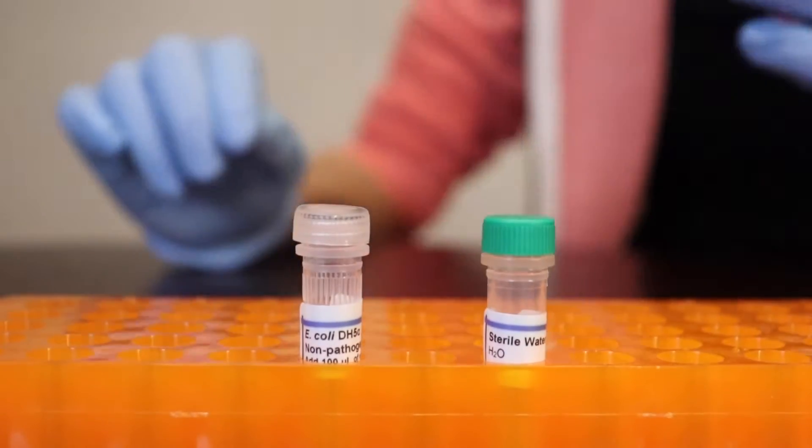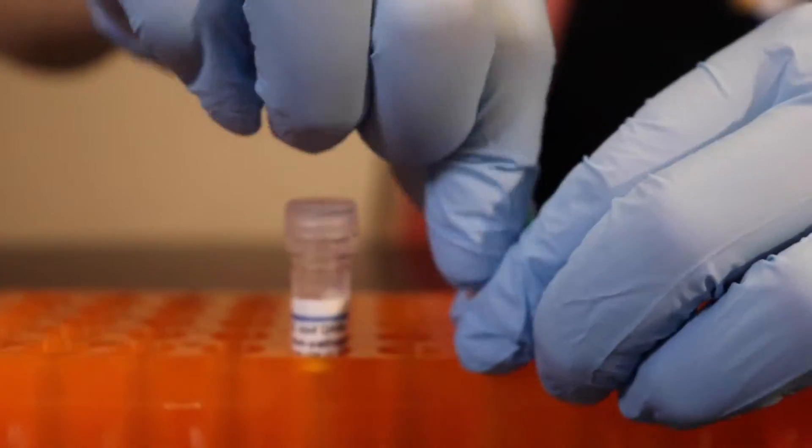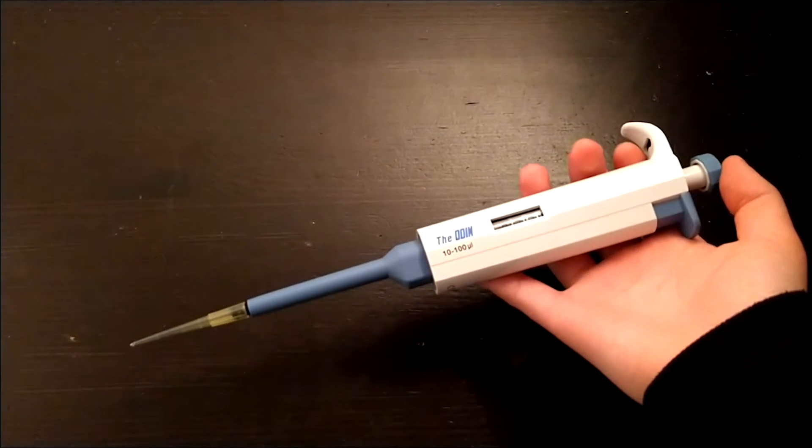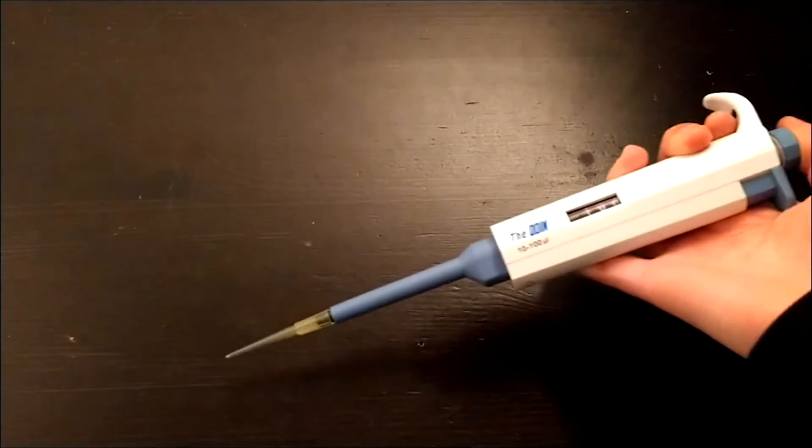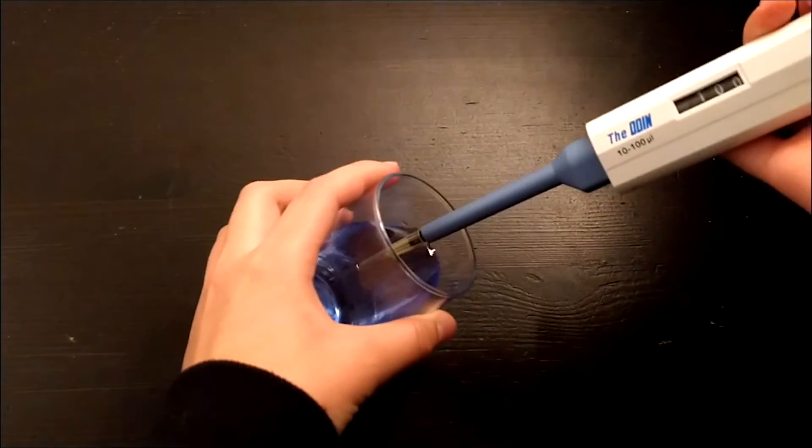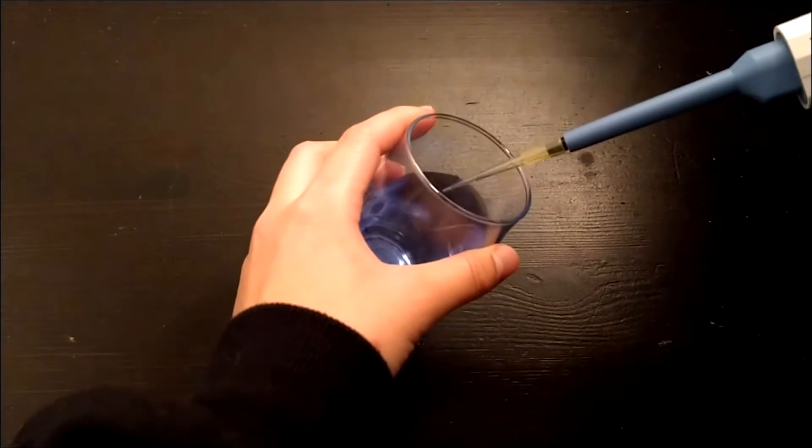Next step is to create competent bacteria, where we first have to pipette some sterile water into our E. coli bacteria to dissolve it. But first, what is a pipette? You can think of a pipette as a really specific eyedropper. You push down to push out the air and create a vacuum, and let go to suck up the liquid, and then push down again to release the liquid.